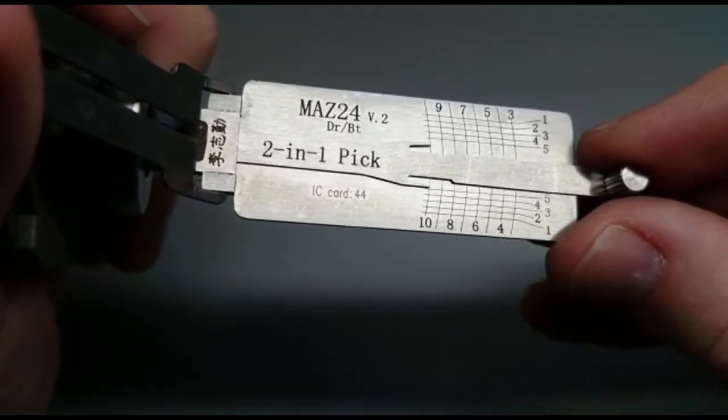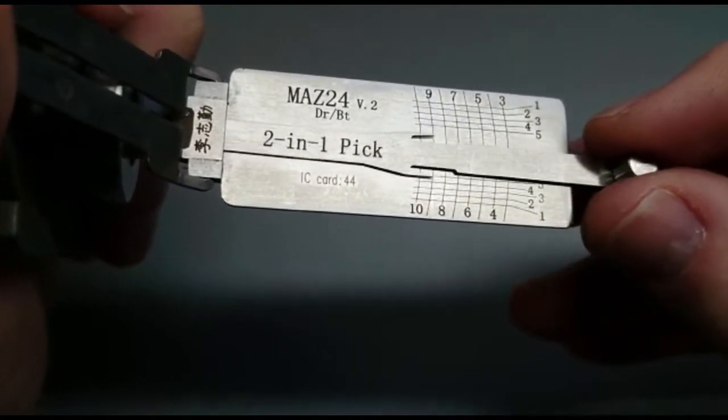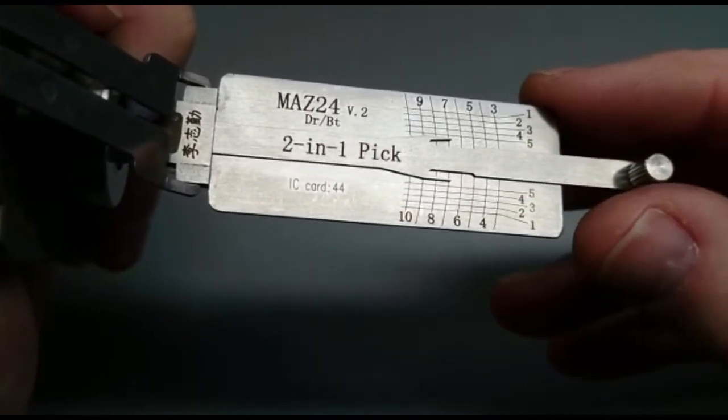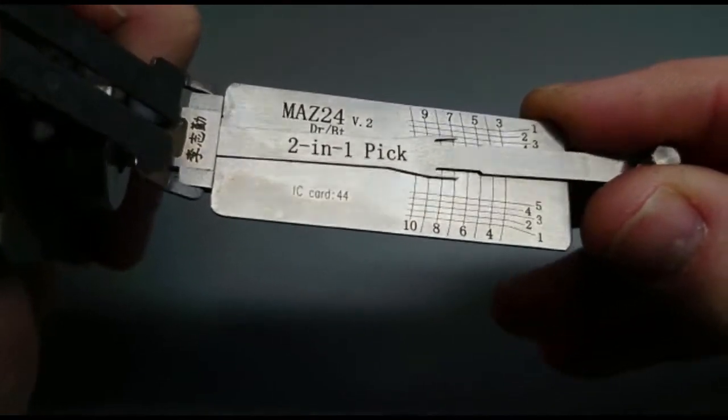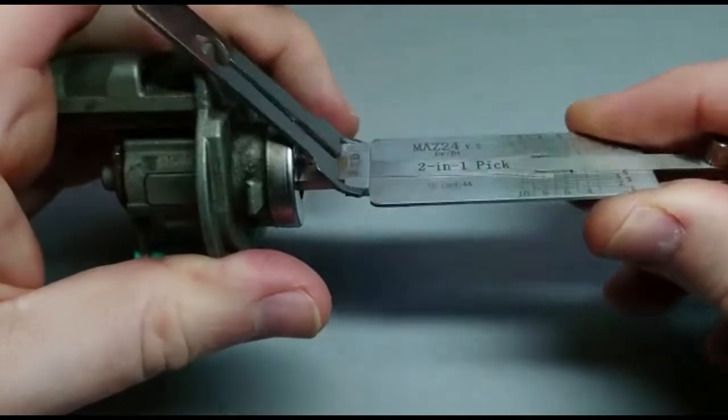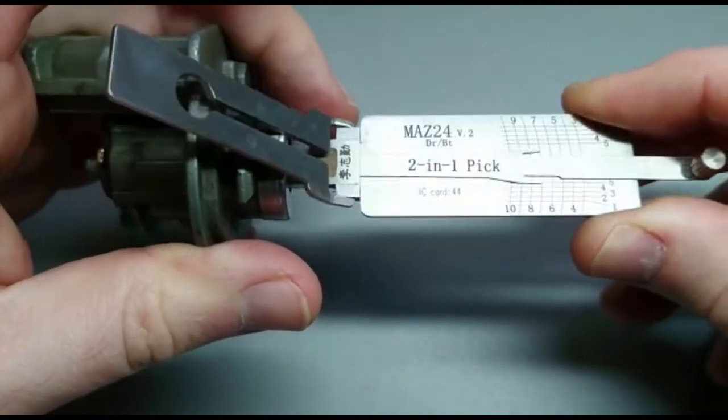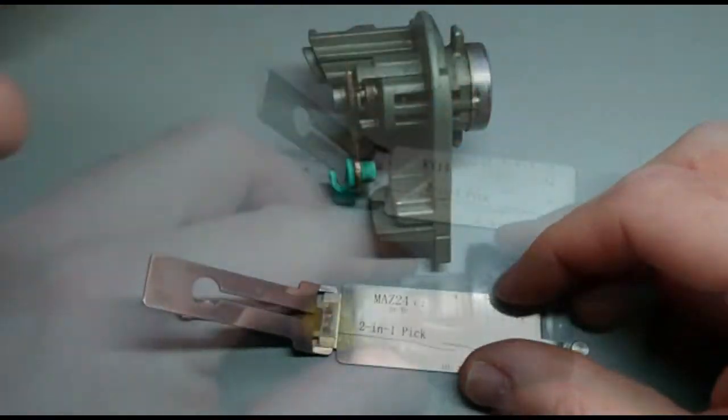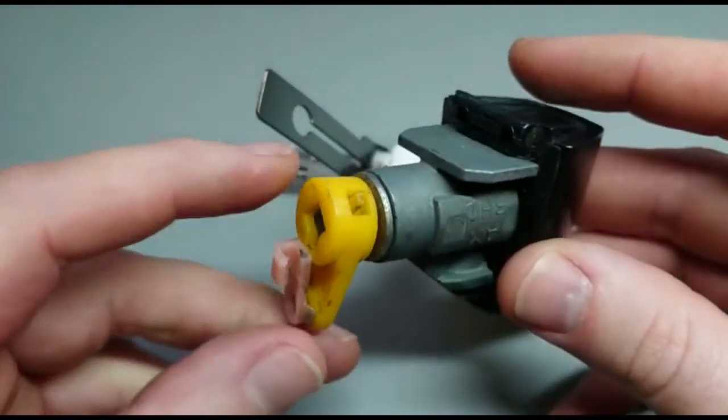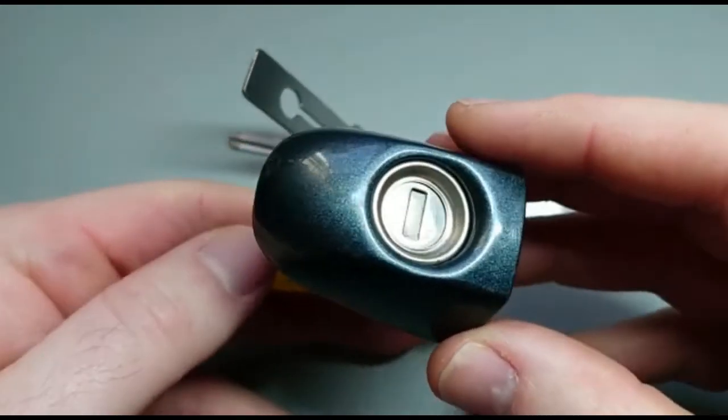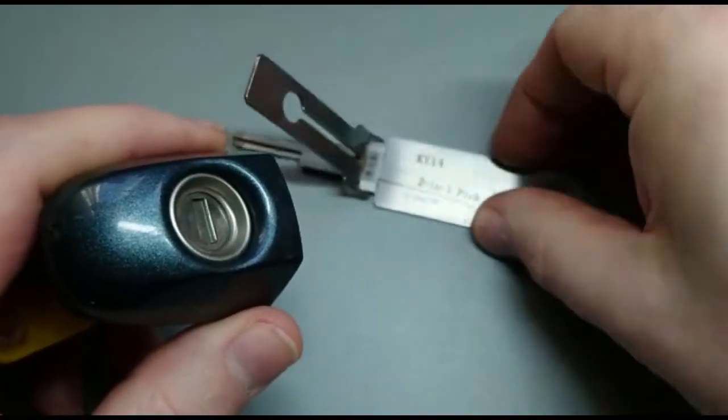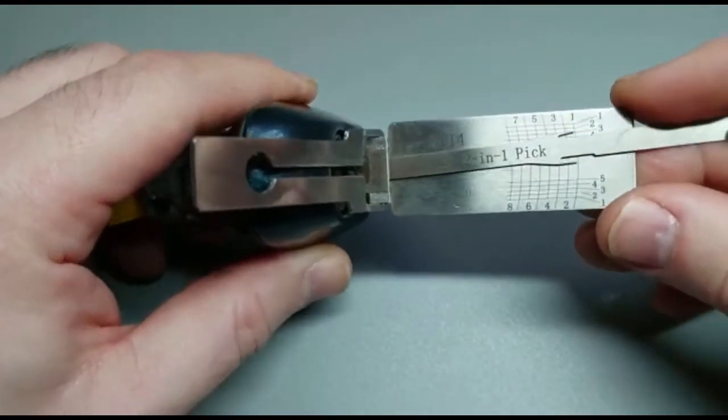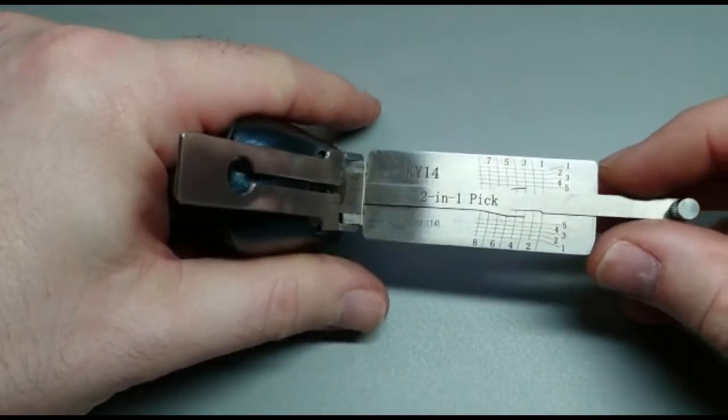And of course you can also decode the lock with these picks. You might be wondering what those other five numbers on the side are. Well they're going to help you with depth. So you've got the number of the wafer as well as the depth of the wafer. So if you wanted to decode the lock and potentially supply the customer with a key you can do it. You can decode it with these picks. Lishi originally made just decoders. They started off selling decoders and they sort of progressed to these decoders and picks. Which is why I think they're called two in one picks.